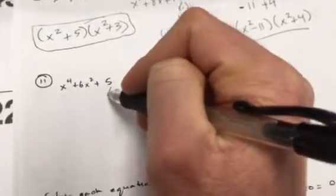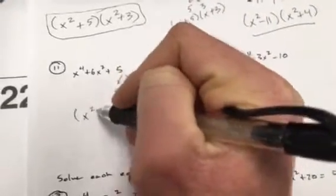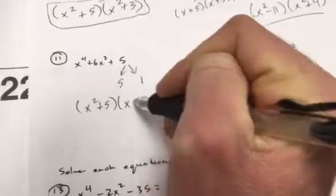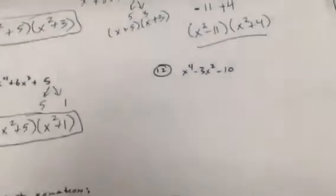All right, so hopefully you guys did 11 and 12. Here we go. What multiplies to 5 adds to 6? 5 and 1. So it's going to be x squared plus 5, x squared plus 1.